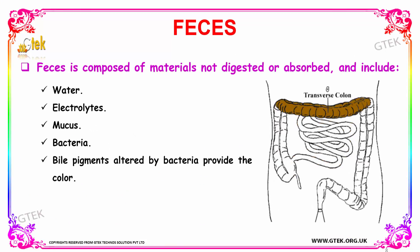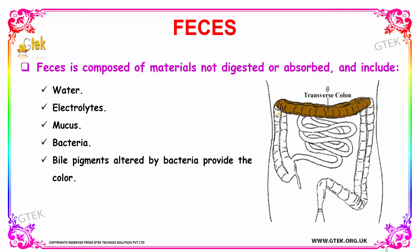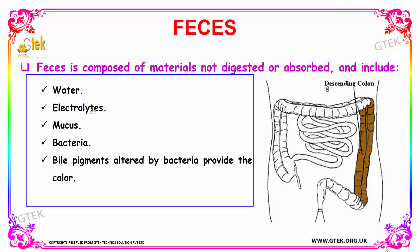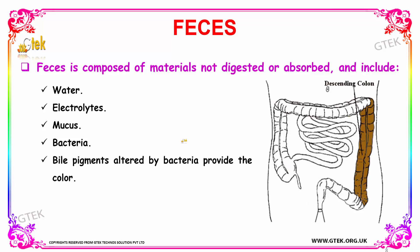Feces is the compound that is ejected outside after digestion. Feces is composed of materials which are not digested or absorbed, and it includes water, electrolytes, mucus, bacteria, and bile pigments altered by bacteria which provide the color. These are the major compounds composing your feces — the materials which are not digested or absorbed.